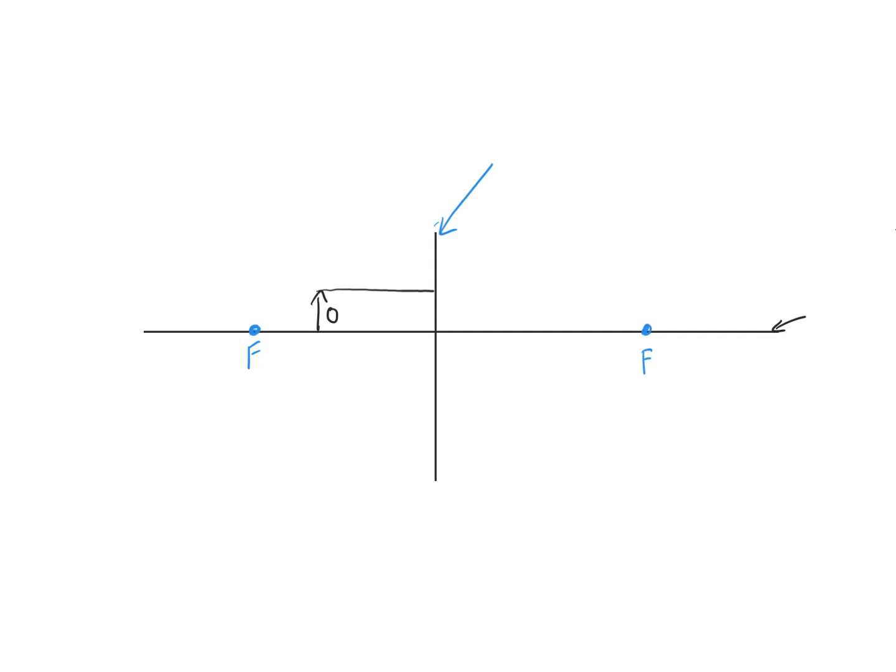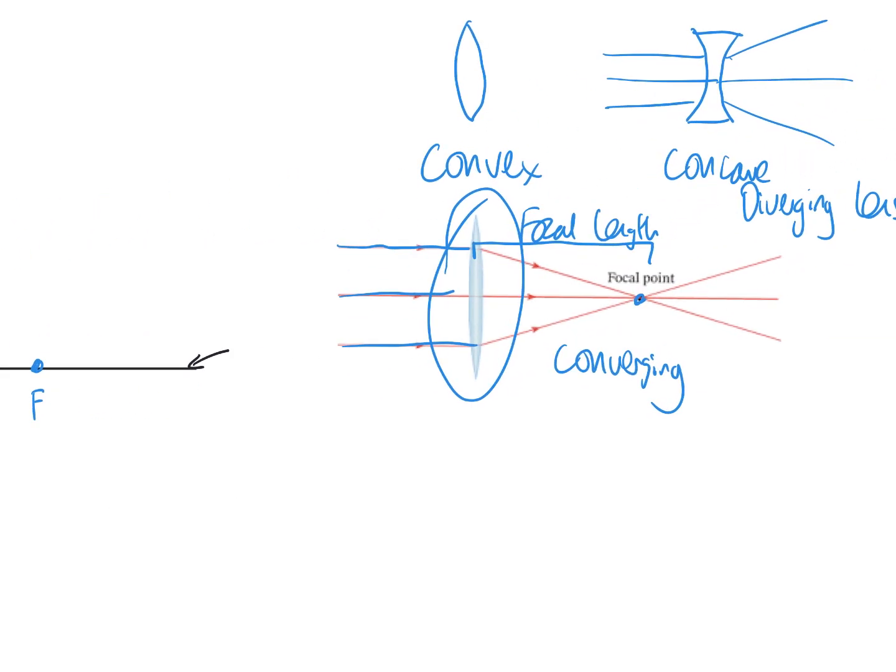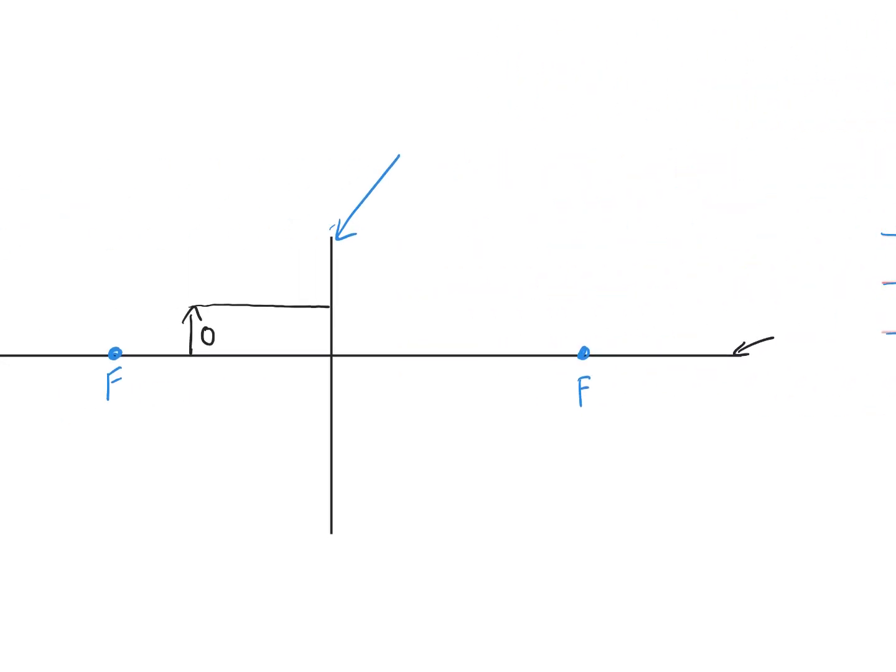When it goes parallel, remember from the previous example, the rays end up going through the focal point. So you know this one is going to go through the focal point there. Use a ruler and make sure you put arrows on your rays to show where they're going.